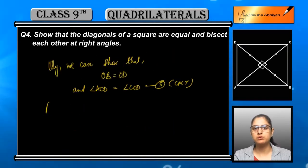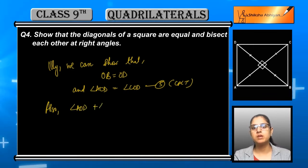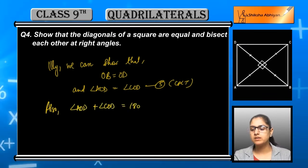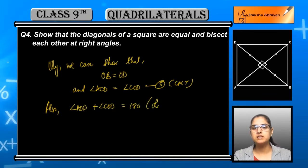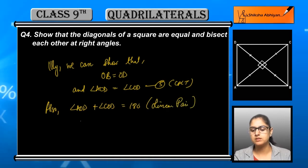By the congruence, we can say that OA is equal to OC. OA and OC are both equal, so we have equation number 4. The reason behind this is corresponding parts of congruent triangles — CPCT.